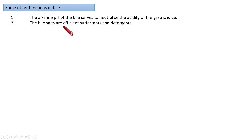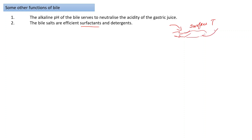Bile acts as an efficient surfactant. A surfactant is any substance that, when added to another substance, reduces its surface tension and helps its spreading. This property aids in the better absorption of lipids — bile's surfactant property helps in the easy absorption of lipids by the body.